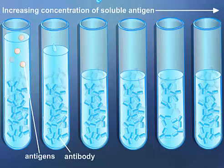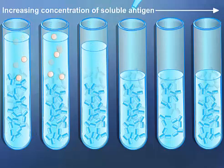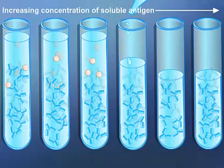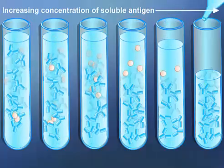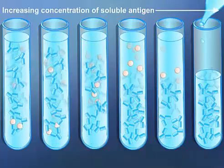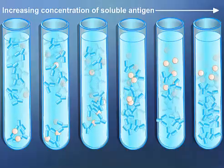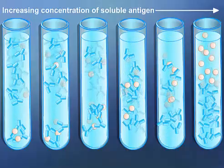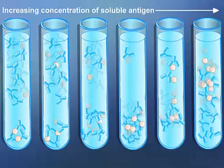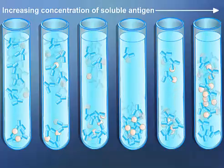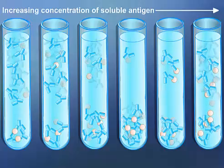The precipitin reaction also occurs when antibodies and soluble antigens are mixed in the proper proportions. The antibodies link the antigens together to form a precipitate that settles out of the solution when it becomes sufficiently large. Immunoprecipitation increases as more and more antigen is added. When the optimum ratio of antigen to antibody is present, called the equivalence zone, the maximum amount of precipitate is formed.